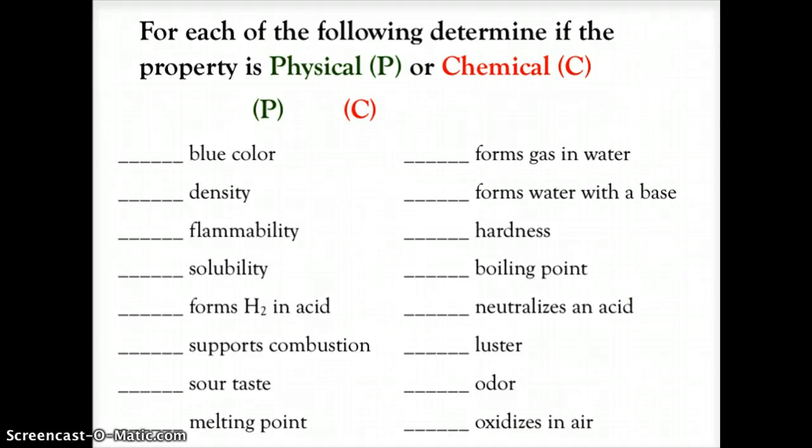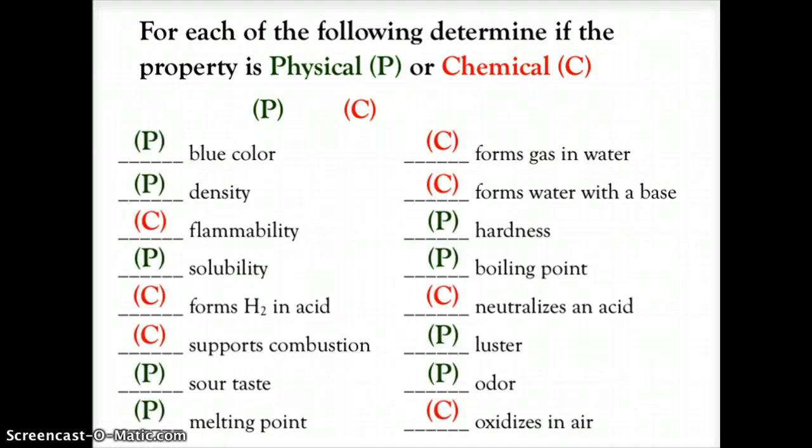Okay, so let's see how you did. Blue color—physical property. Density—physical property. If you have pieces of aluminum and they're large or they're small, they still have the same density. Flammability is going to change what the matter is composed of, and that's going to be a chemical property. Solubility—when salt dissolves, it's still salt, it's just mixed into the water, so that's a physical property.